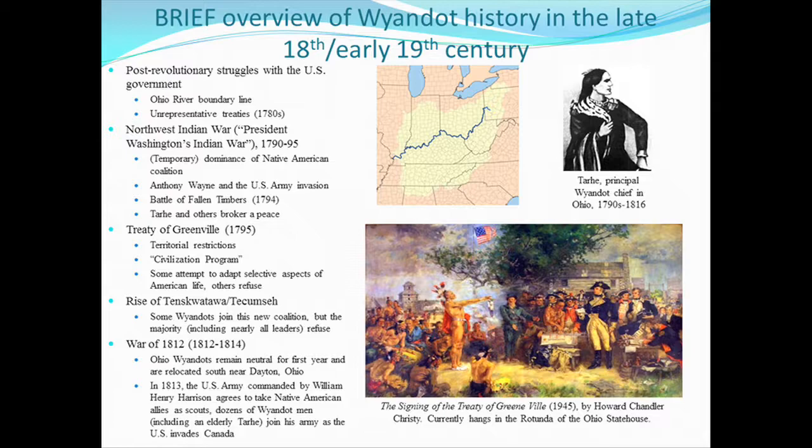After that first year, both the Wyandotte and the United States military decided they would like some Native men to have the opportunity to fight in the war. In 1813, the U.S. Army commanded by William Henry Harrison — future president of the United States — agreed to take the Wyandotte and other loyal Native peoples as volunteers, mainly to use as scouts and negotiators to try to get other Native people to stop fighting. Dozens of Wyandotte men, including Tarhee, who was probably about 70, went and actually fought. Harrison later gave them a lot of credit for persuading Native people to give up fighting sooner.